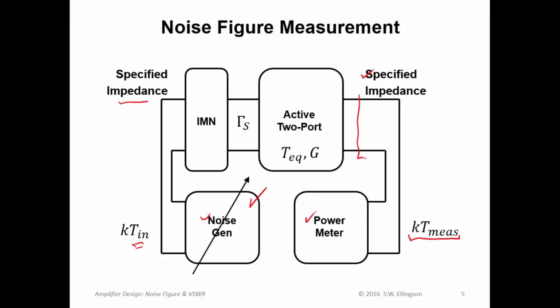I have a specified impedance at the input, which the noise generator should respect. And I have a specified impedance at the output, which the power meter should respect. And typically I will still have the OMN here, but it's not gonna matter. So I'm not gonna show it. The only purpose of having the OMN here would be to achieve the specified impedance which the power meter is expecting. And then, of course, everything depends on gamma sub S, that is the source reflection coefficient, the equivalent input-referred noise temperature of the active two-port, and its gain.